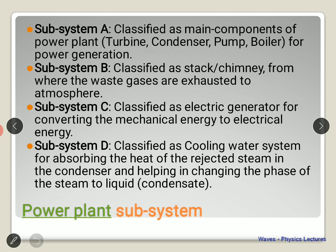Looking at the power plant subsystem, it can be classified into four categories. Subsystem A comprises the main components: the turbine, condenser, pump, and boiler — what is needed for power generation. The Rankine cycle is based on this subsystem A.